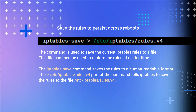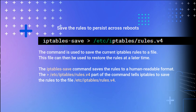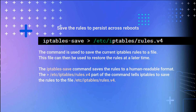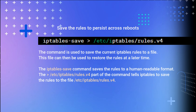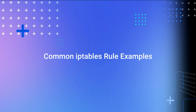Save the rules to persist across reboots. The 'iptables-save' command is used to save the current IP Tables rules to a file, which can then be used to restore the rules at a later time. The command saves rules in a human-readable format to the file '/etc/iptables/rules.v4'.